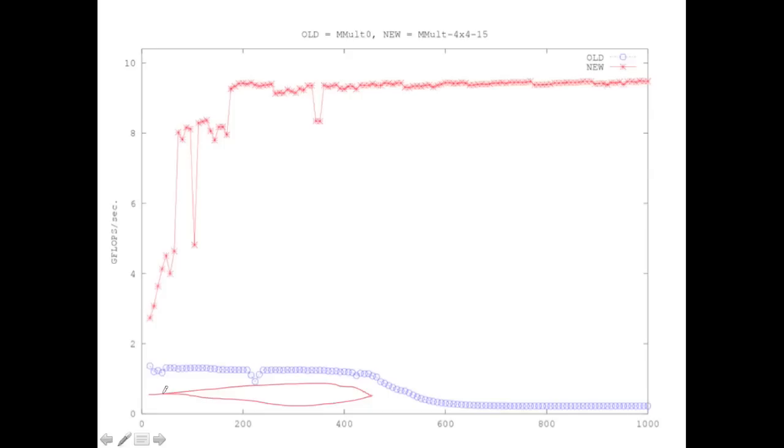As the matrix sizes get larger, matrices no longer fit in the L2 cache. And your performance suffers. And eventually, you get maybe one or two percent, maybe three percent of the peak of the machine.